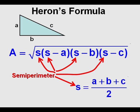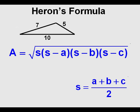Let's work a problem. We have this triangle with sides of 7, 10, and 5. Without a formula like Heron's, we would have some work to do to find the height of this triangle before using the area equals one-half base times height formula.